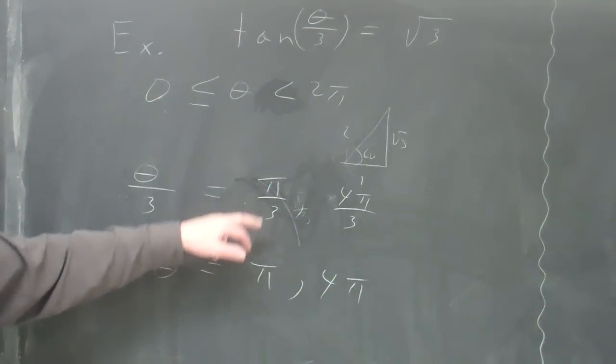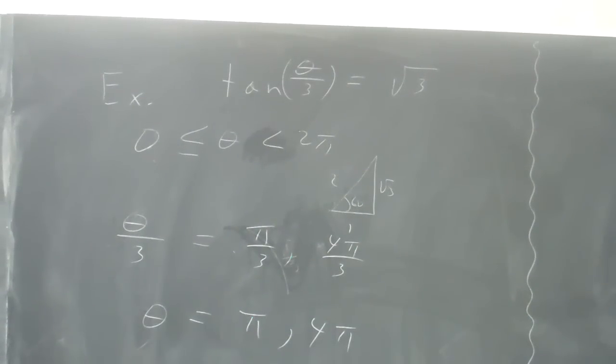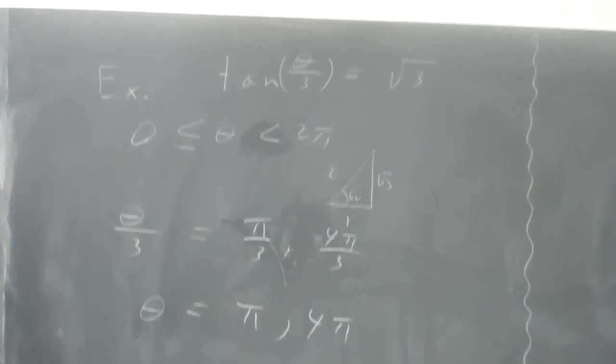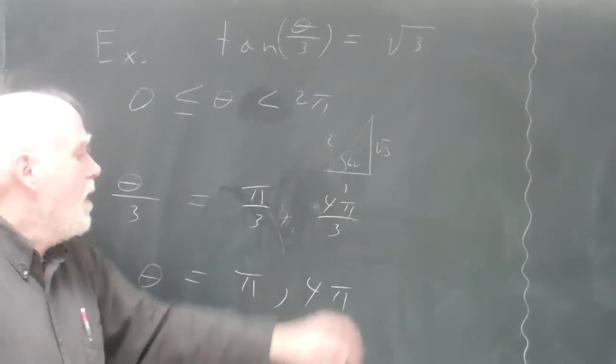It is true that pi, if I put pi in here and divide it by 3 and take the tangent, I will get the square root of 3. The same thing with 4 pi, it will work also.